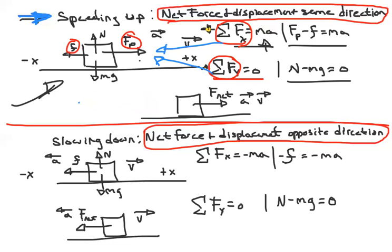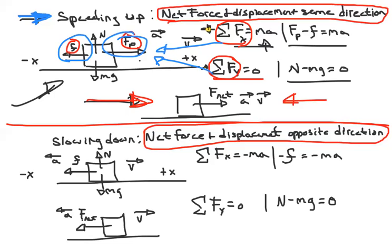After we net all these vectors together, we get the superposition — we draw one vector that represents all the force vectors in the x direction. That's our net vector or superposition vector for speeding up.